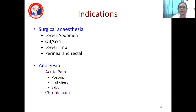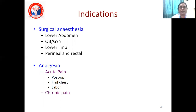The indications for spinal anesthesia include lower abdominal surgery, obstetric surgery such as cesarean section (LSCS), and gynecological surgery like hysterectomy or vaginal hysterectomy. Any lower limb orthopedic surgery — fracture fixation, joint procedures — can be given under spinal anesthesia. Perineal and rectal surgery such as hemorrhoidectomy also qualifies. For post-operative analgesia, labor analgesia, and chronic pain management, epidural analgesia is used.